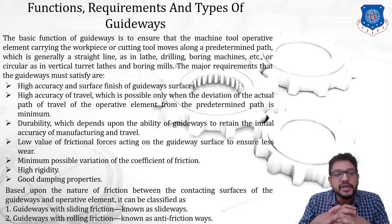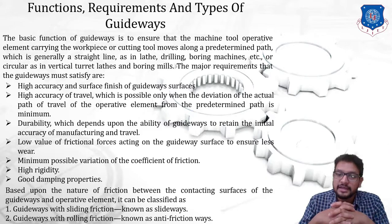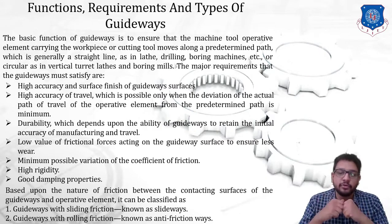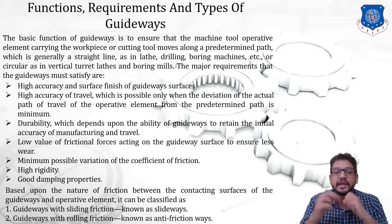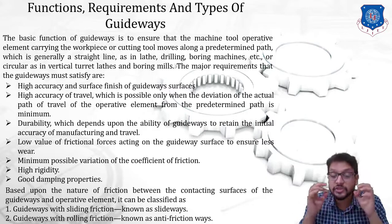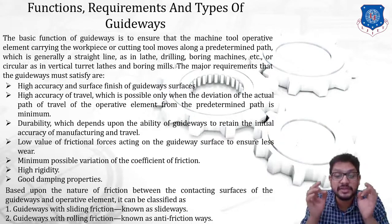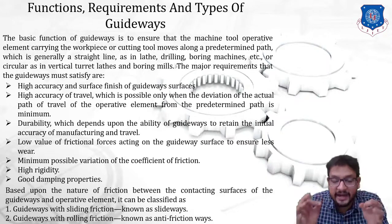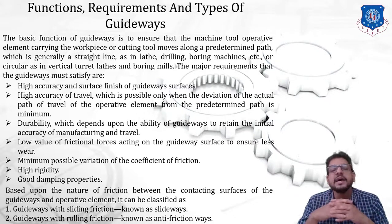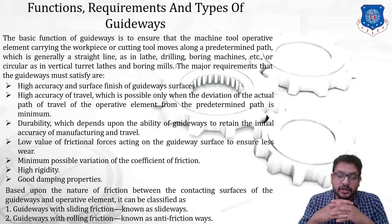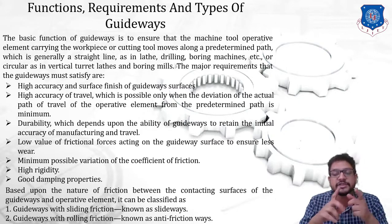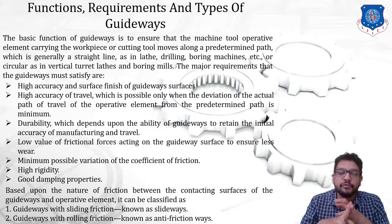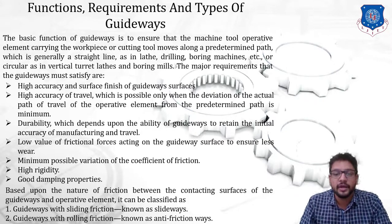Based upon the nature of friction between the contacting surfaces of a guideway and an operative member, guideways can be classified into two types. The first type is guideways with sliding friction, also known as slide ways, because sliding motion takes place. The second type is guideways with rolling friction, also known as anti-friction ways. So remember: the two types are slide ways and anti-friction ways.